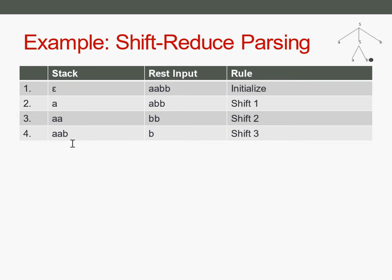Now you can see that the last part of the stack — those A and B — is the same as the right-hand side of one of our rules. Shift-reduce parsing, because it's like top-down but backwards, can take that right-hand side and exchange it for the left-hand side of the rule.